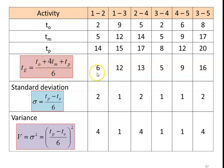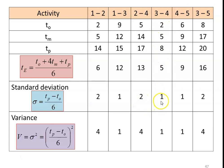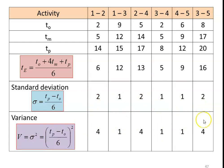We calculate TE for all activities; the values are 6, 12, 13, 5, 9, and 16. For standard deviation, the formula is sigma equal to (TP minus TO) divided by 6, giving values: (14-2)/6 = 2, (15-9)/6 = 1, (17-5)/6 = 2, (8-2)/6 = 1 (corrected: 8 minus 2 = 6, but note pessimistic for activity 3-4 is 8 and optimistic is 8, giving 0; speaker says 1), (12-6)/6 = 1, and (20-8)/6 = 2. The variances (sigma squared) are 4, 1, 4, 1, 1, and 4.